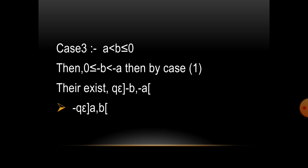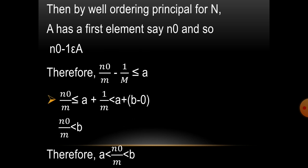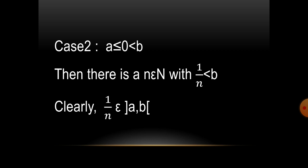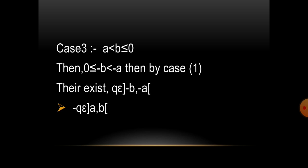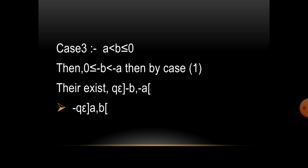In Case 3, we prove A < B ≤ 0. In Case 1, we proved 0 < A < B. In Case 2, we proved A ≤ 0 < B. In Case 3, A < B ≤ 0. Then 0 ≤ -B < -A. By Case 1, there exists Q belongs to (-B, -A). It implies that -Q belongs to the open interval (A,B).